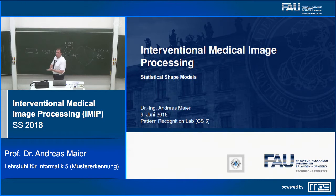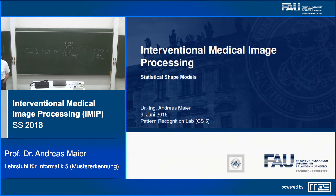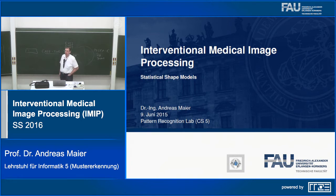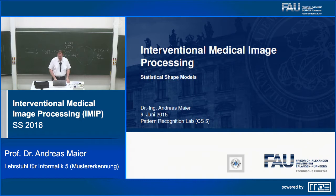Welcome back to interventional medical image processing. Last lecture we talked about random walker, a local segmentation method using edges and local features to derive shapes semi-automatically. Today we want to look at a method that is the contrary — here we want to start from a shape model and fit it to our image.